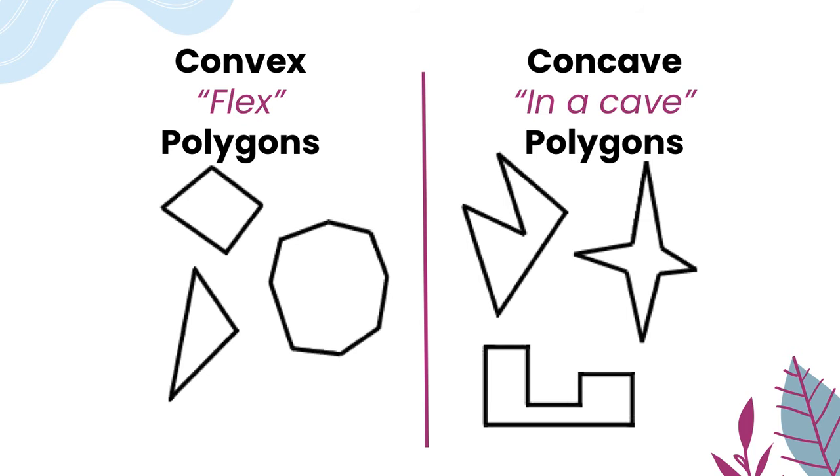This first one is an example of convex. Convex is kind of like flex—when you flex, you make your muscles and pop them outside, so we're thinking it has to be outside of the shape. When we're thinking about concave, think in a cave—it has to be inside, so at least one point has to be inside on our shape.